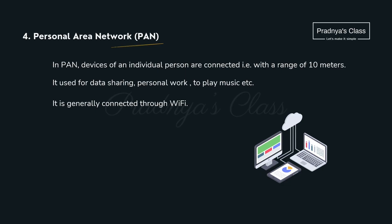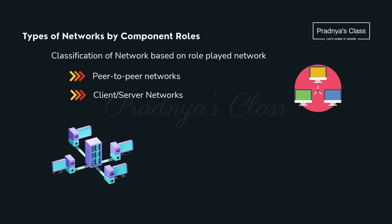The fourth type is PAN — personal area network. In PAN, the devices of an individual person are connected within 10 meters, such as within our home. We can use this for personal work or for sharing data. Inside our home, we generally use a Wi-Fi connection. Here are the types of network based on role.